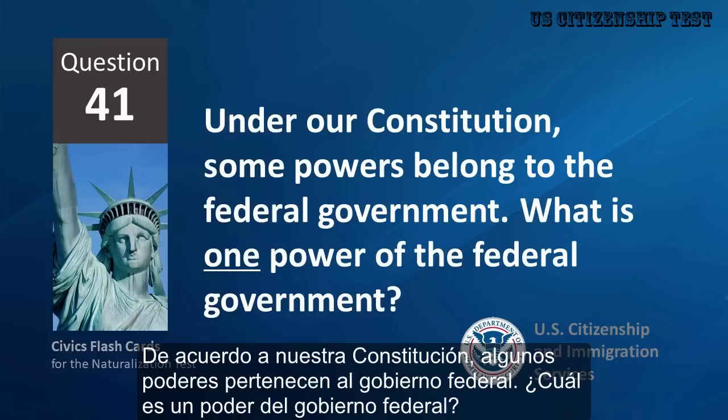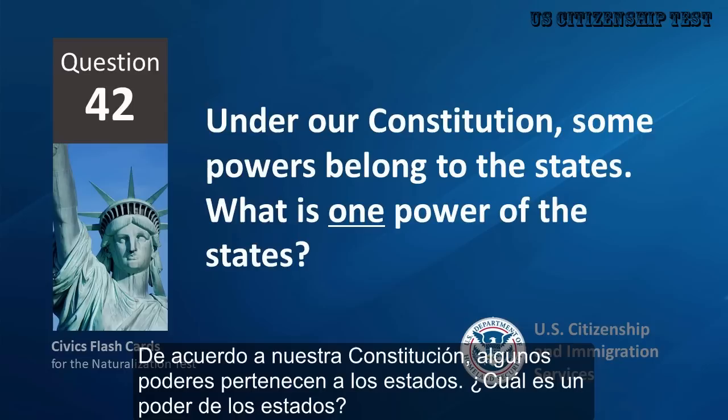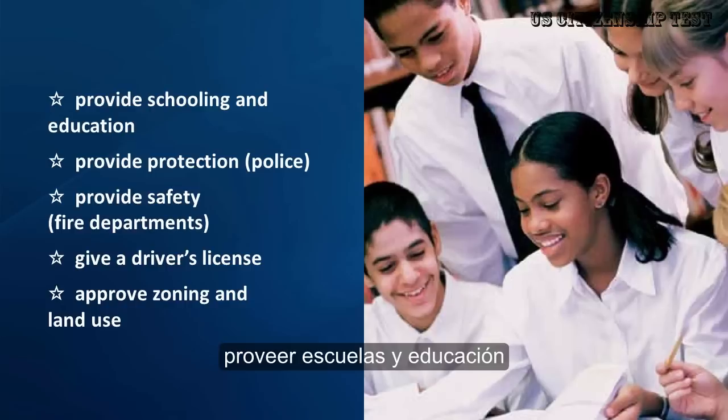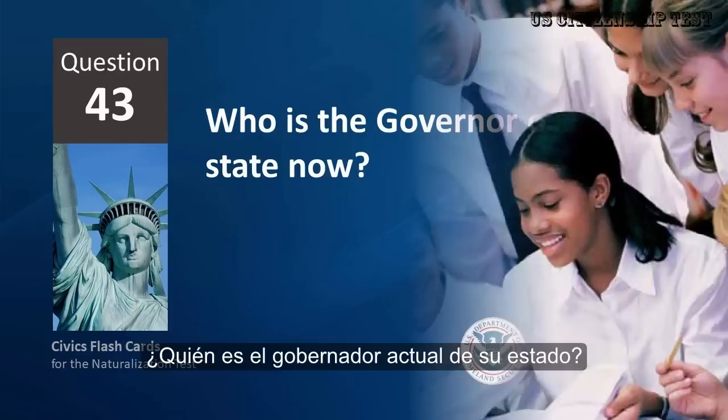Under our Constitution, some powers belong to the Federal Government. What is one power of the Federal Government? To print money, to declare war, to create an army, to make treaties. Under our Constitution, some powers belong to the States. What is one power of the States? Provide schooling and education, provide protection and police, provide safety and fire departments, give a driver's license, approve zoning and land use.